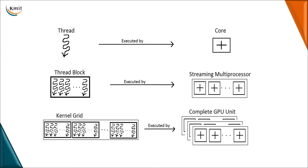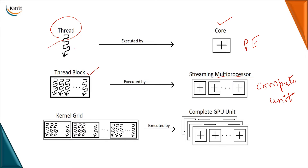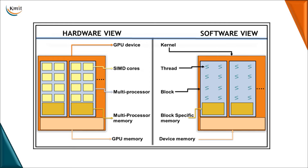The actual execution unit is nothing but your thread. Whatever thread you write will be executed on a device known as a core. A combination of all the threads is called a block, and this block will be executed by a streaming multiprocessor. In other terms, the core is known as a processing element and the streaming multiprocessor is your compute unit. A combination of all the blocks together is called a grid, and this is executed by your total GPU.